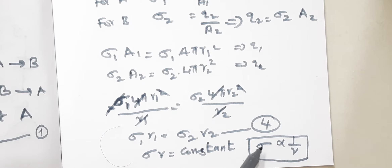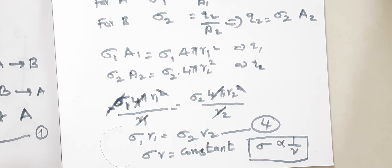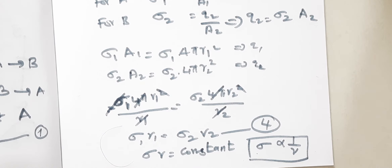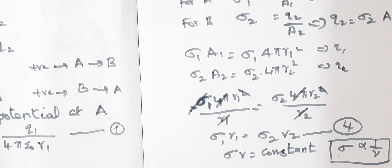Surface charge density σ is inversely proportional to the radius of the sphere. For smaller radius, charge density will be more; for greater radius, charge density will be less. This is what we are explaining in distribution of charges — the distribution of charges in a conductor depends on the shape of the conductor. For a sharper edge, the surface charge density is greater, because a sharper edge has a smaller radius. So we conclude that surface charge density is inversely proportional to the radius of the sphere.